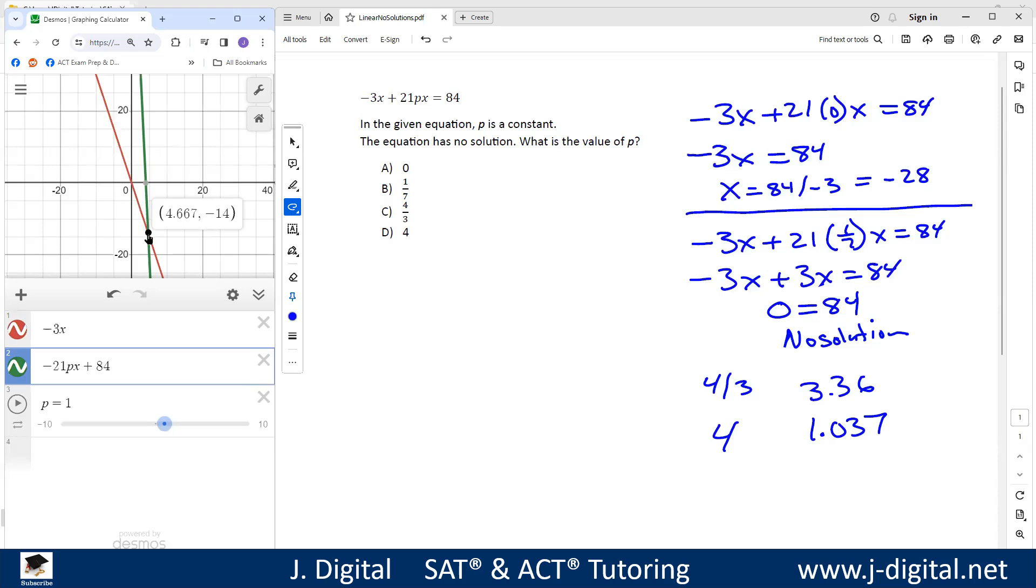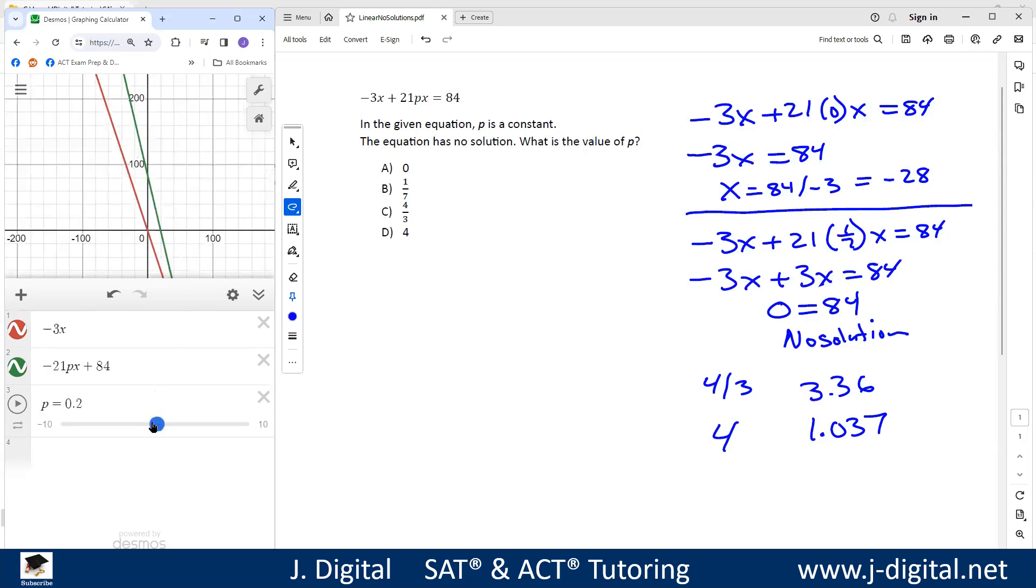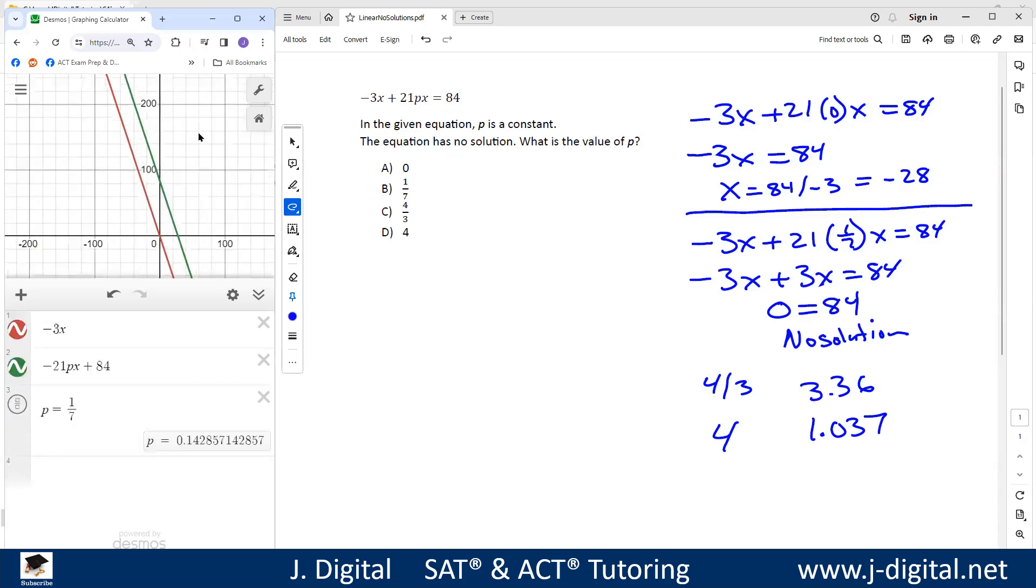The first one, -3x, has a y-intercept of 0. The second one, we have a y-intercept of 84. So they have different y-intercepts, so we just need to have the same slope. This is a little bit harder because we know the answer is 1/7. If I change my slider, we can see a line moving at 0.1, 0.2, you know, it's kind of in between 0.1 and 0.2. But we can put in our answer choices. We know it's 1/7, so I'll just put that in. And then now you can tell that those two lines are parallel.